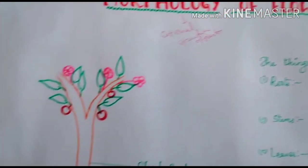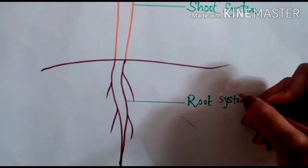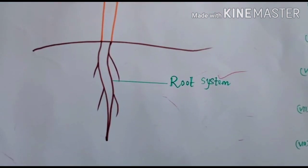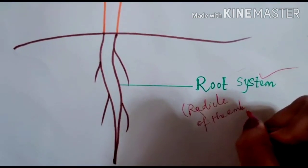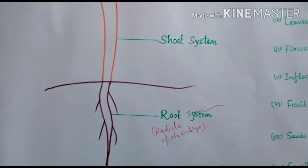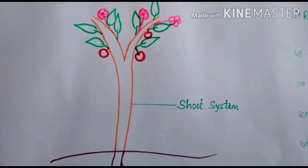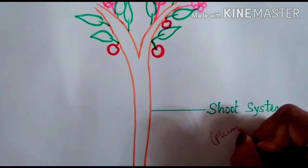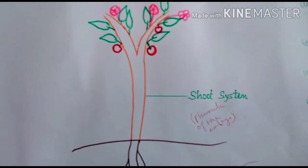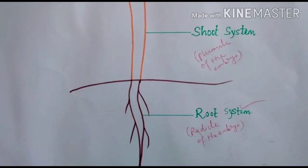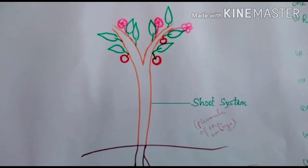When we draw a flowering plant, we find the underground part, which is called the root system. This root system is developed from the radicle of the embryo, and it is the underground part of the plant. Then the shoot system — this shoot system is developed from the plumule of the embryo, which gives rise to the stem. So the root is developed from the radicle, and the shoot system or stem is developed from the plumule of the embryo.